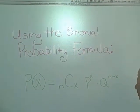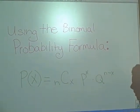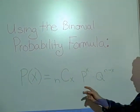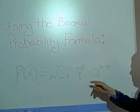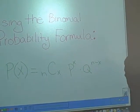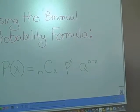We're going to show you how to use the binomial probability formula. The formula is the combination of n and x times p to the x times q to the n minus x.